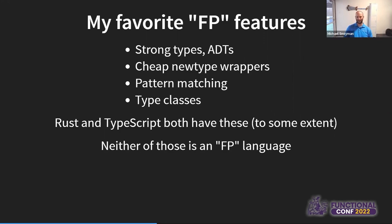I'm not sure you can really argue that TypeScript has type classes, but it does have the other three. And if you squint and change the names a little bit, Rust has all four, at least to some extent. Very few people would make the claim that Rust or TypeScript are FP languages. So what we're seeing is that what I consider the wonderful pieces of FP have already been adopted by new languages that don't consider themselves FP.